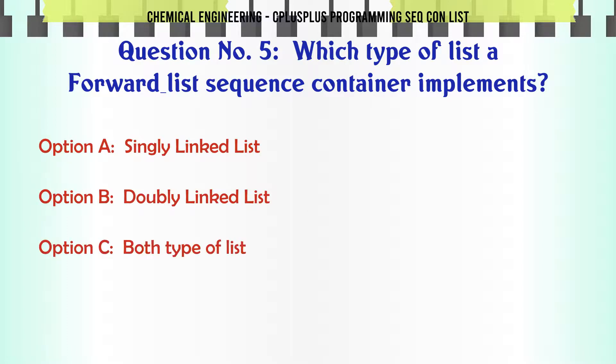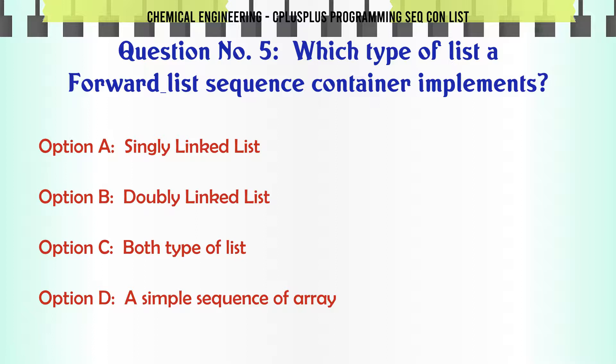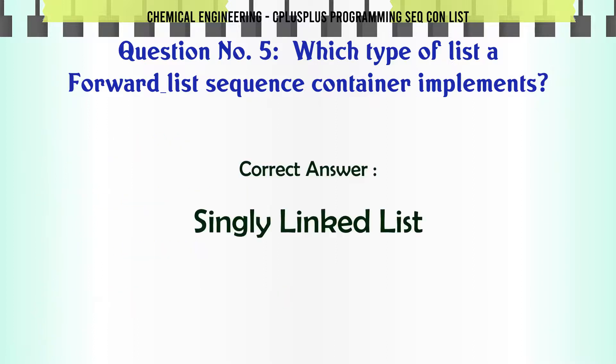Which type of list does a forward list sequence container implement? A. Singly linked list. B. Doubly linked list. C. Both types of list. D. A simple sequence of array. The correct answer is: singly linked list.